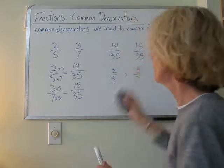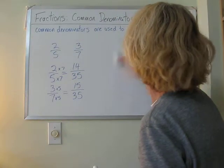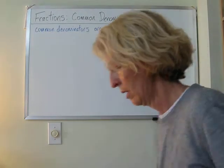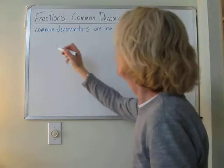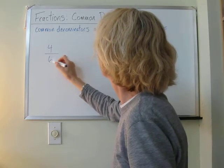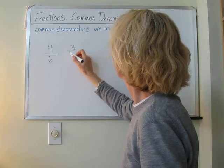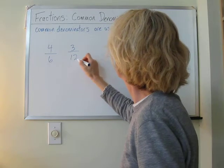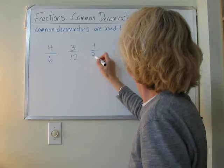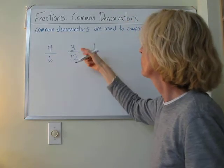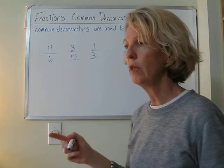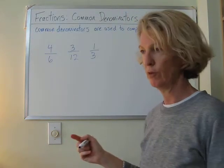Should we do another example? Sure! Okay. Let's compare 4 over 6, 3 over 12, and 1 over 3. 4 sixths, 3 twelfths, and 1 third. And we're going to order these from smallest to largest, from least to greatest.